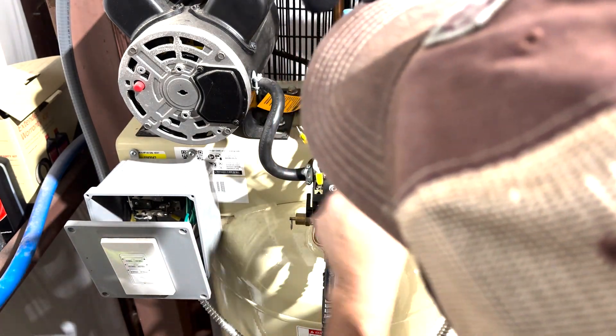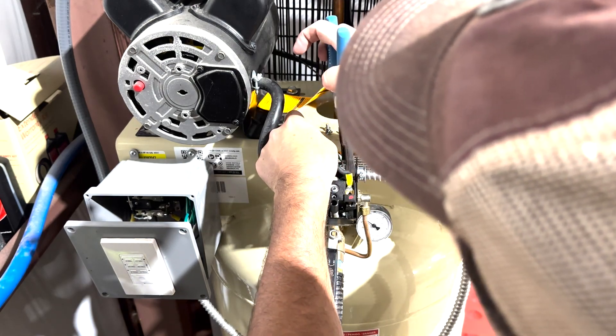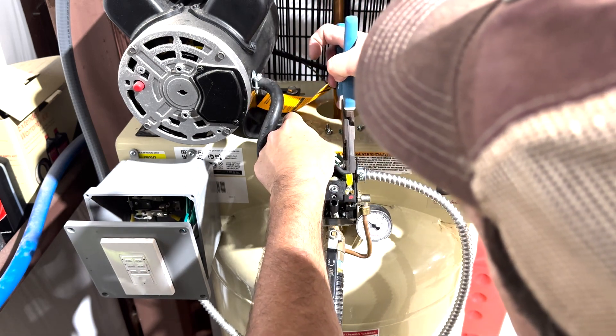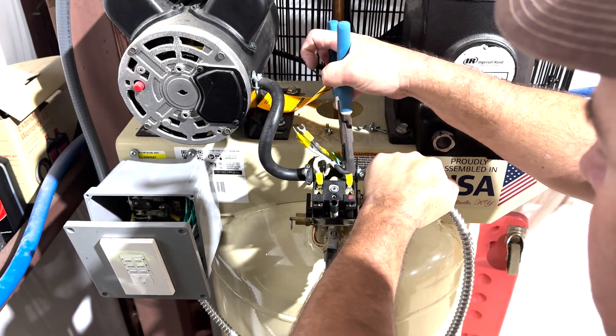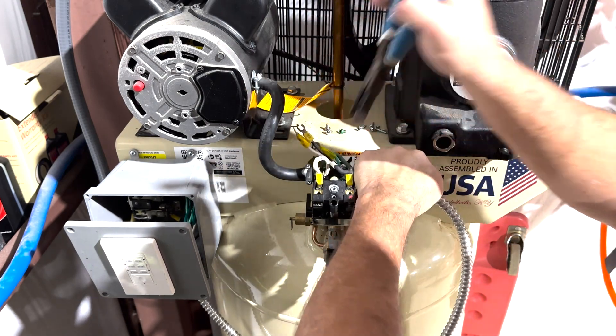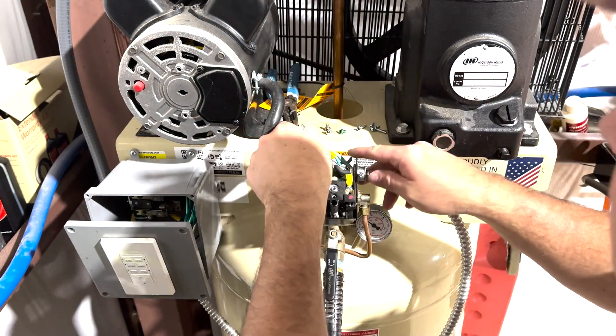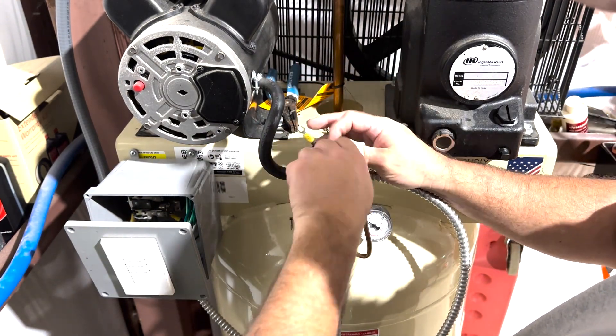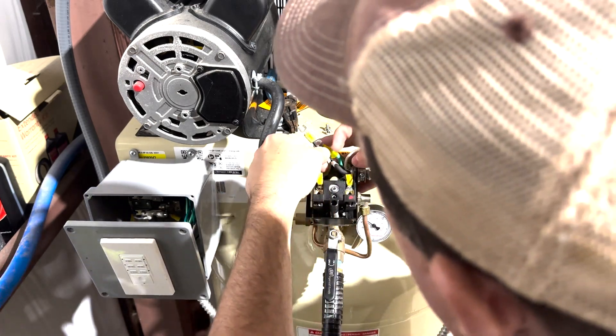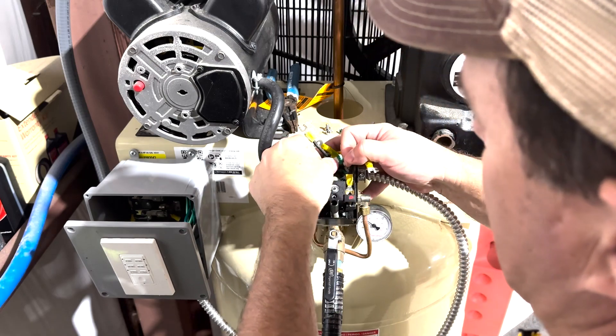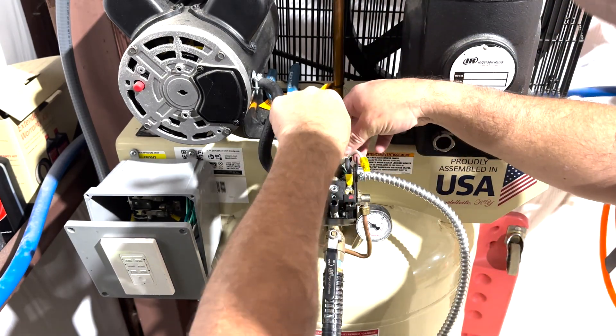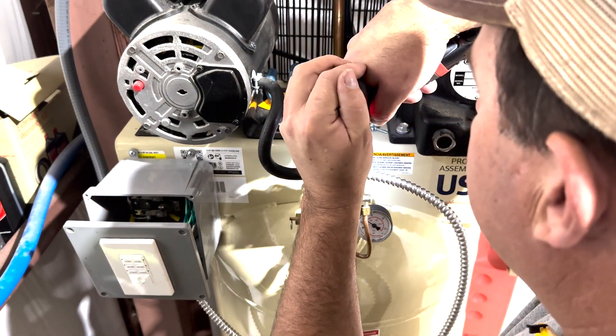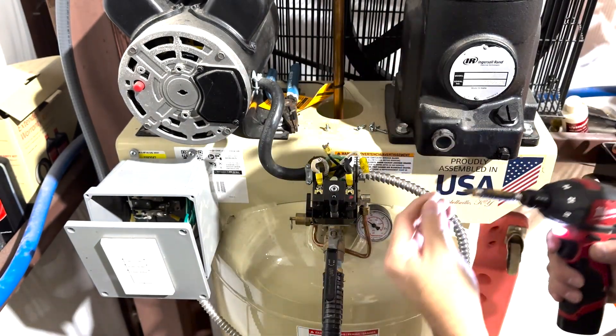Get some of these wires out of the way. All right, and then we're going to take and snug that down. And then we're going to move these connectors around and get them hooked up. But before we do, we're going to get this ground connected since it's down below and on the bottom. All right, we've got the ground down.